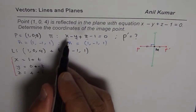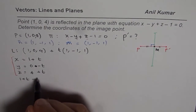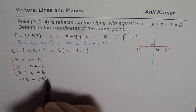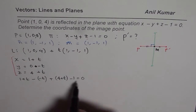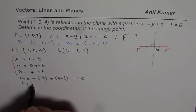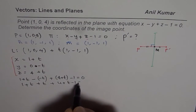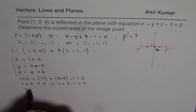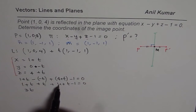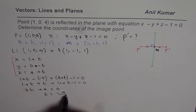Substituting: x is 1 + t, so we write (1 + t) minus y which is (−t), plus z which is (4 + t), minus 1 equals 0. Opening the brackets: t plus t plus 4 plus t minus 1 equals 0, giving us 3t plus 4 equals 0. Therefore t equals minus 4 over 3.